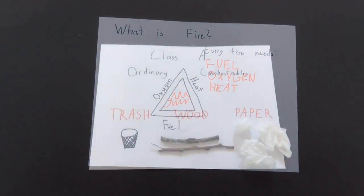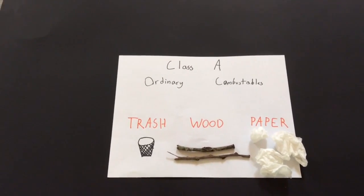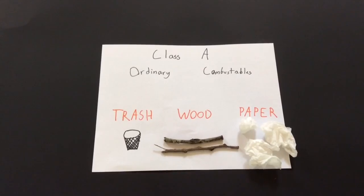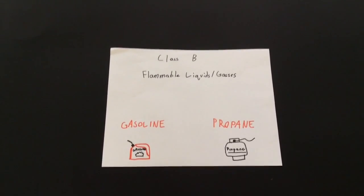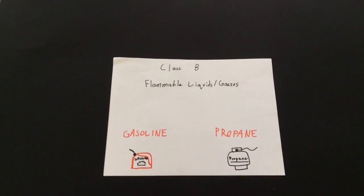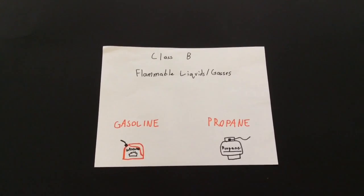The first classifier is Class A. These fires are because of ordinary combustibles such as trash, wood, and paper. The next classifier is Class B. These fires are because of flammable liquids and gases such as gasoline and propane.